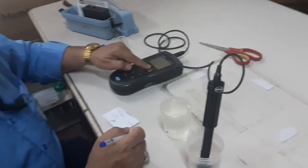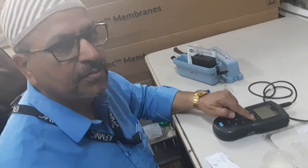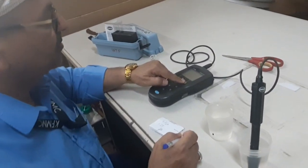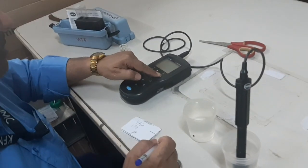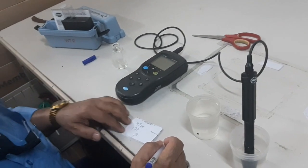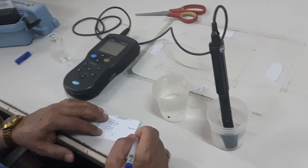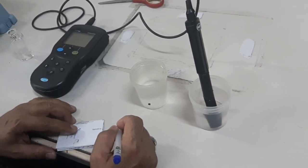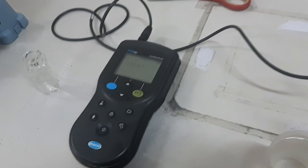Now, the next procedure is we are measuring the TDS. TDS is total dissolved solids, which are the dissolved inorganic and organic matter which are contained in the water. Now, the operator is taking the water sample from the potable water storage tank, otherwise known as product water.